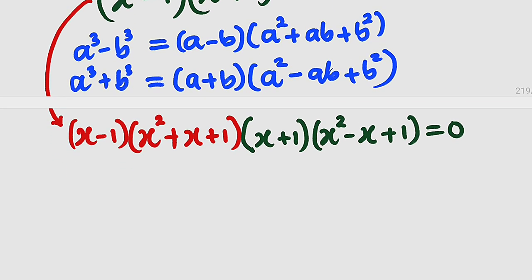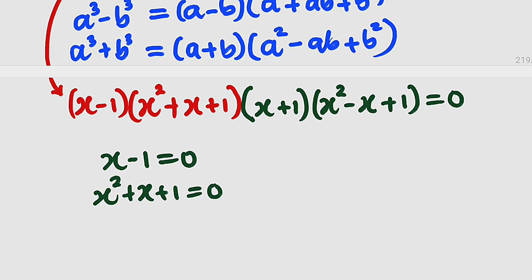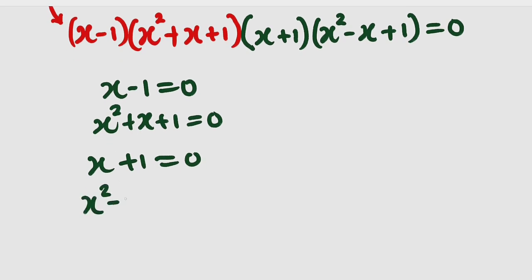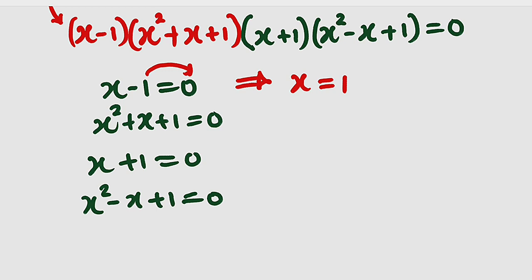Now observe, we have four factors. Either x minus 1 equal to 0, or x squared plus x plus 1 equal to 0, or x plus 1 equal to 0, or lastly x squared minus x plus 1 equal to 0. We can simply solve these two: x equal to 1 is a solution, and also x equal to negative 1. So far we have two solutions, and we need to solve the quadratic equations using the general formula.